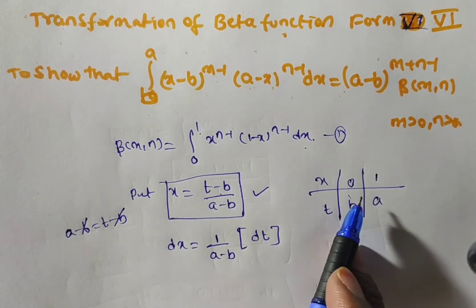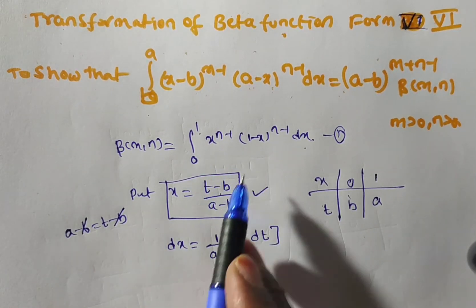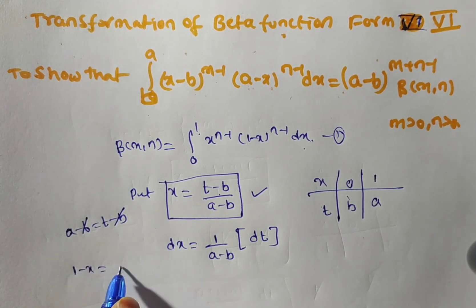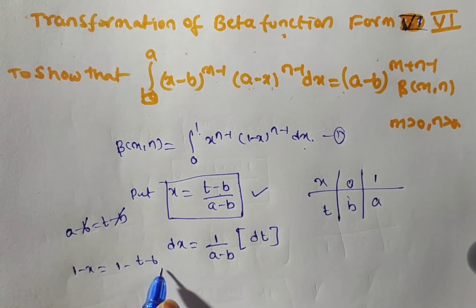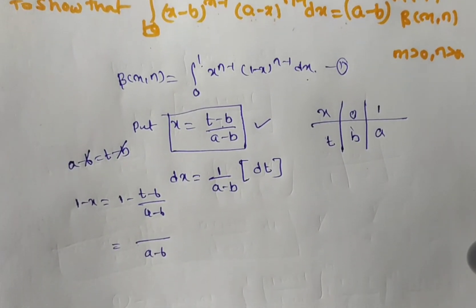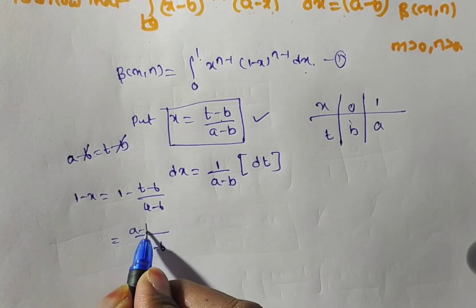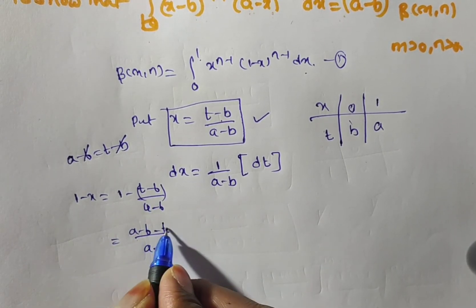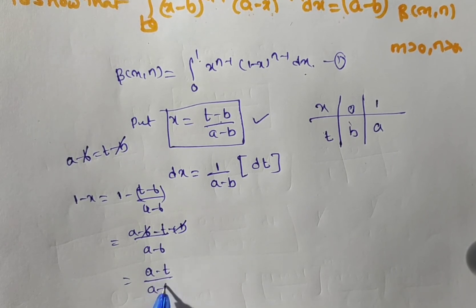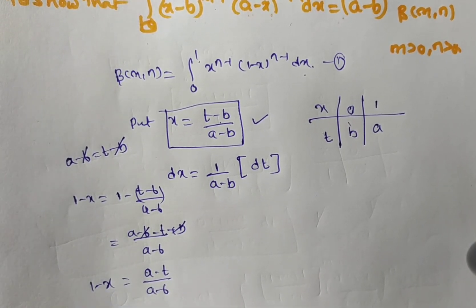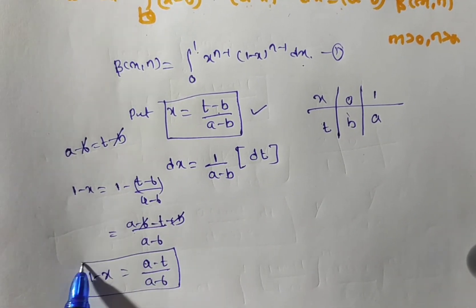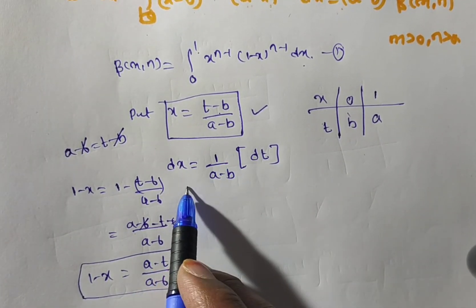Now substitute this limit value and dx value. Moreover, you also require 1 minus x. So find out 1 minus x. One minus x equals 1 minus (t minus b) by (a minus b). Taking LCM as (a minus b), this becomes (a minus b minus t plus b) by (a minus b). The minus b and plus b cancel, giving (a minus t) by (a minus b). This is the value of 1 minus x.